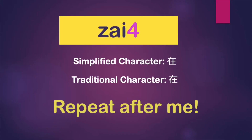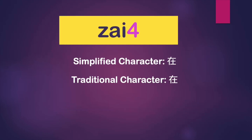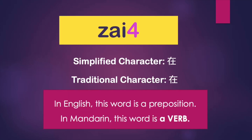Please repeat after me: 在. This word is used to tell someone where you are. English native speakers use 'at', 'on', or 'in' to introduce a place you are right now. However, in Mandarin, we only need 在, this one word, to introduce a location. It's efficient, isn't it?